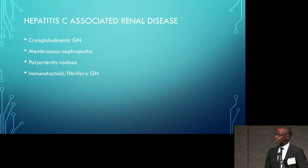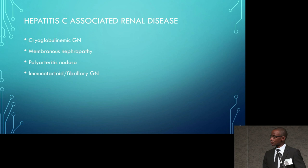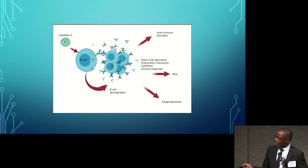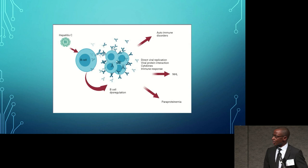The different types of hepatitis C-associated renal disease include cryoglobulinemic glomerulonephritis, membranous nephropathy, polyarteritis nodosa, and immunotactoid or fibrillary glomerulonephritis, with the last two being less common. The hepatitis C virus has trophism for the B cell, leading to B cell dysregulation, clonal expansion, and stimulation of antibody formation. This may lead to autoimmune disorders, paraproteinemias, or direct viral replication with cytokines and immune responses leading to renal injury. In 68% of patients with chronic hepatitis C, there may be predisposition towards B cell lymphomas.